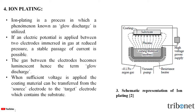Next, let us understand what is ion plating. Ion plating is a process in which a phenomenon known as glow discharge is utilized. If an electric potential is applied between two electrodes immersed in a gas at reduced pressure, a stable passage of current is possible. The gas between the electrodes becomes luminescent — hence the term glow discharge. When sufficient voltage is applied, the coating material can be transferred from the source electrode to the target electrode which contains the substrate. Here, we can see the schematic representation of ion plating, where the coating material is deposited on the substrate in a plasma medium, forming a thin coating.